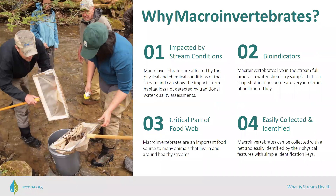Macroinvertebrates are most commonly used to assess stream health for many reasons. They're affected by the physical and chemical conditions of the stream. They show the impacts of habitat loss not detected by traditional water quality assessments. They can't escape pollution and show the effects of short- and long-term pollution events. Some are very intolerant of pollution. They live in the stream full time, versus a water chemistry sample that's a snapshot in time. They are a critical part of the stream's food web and they are relatively easy to sample and identify.